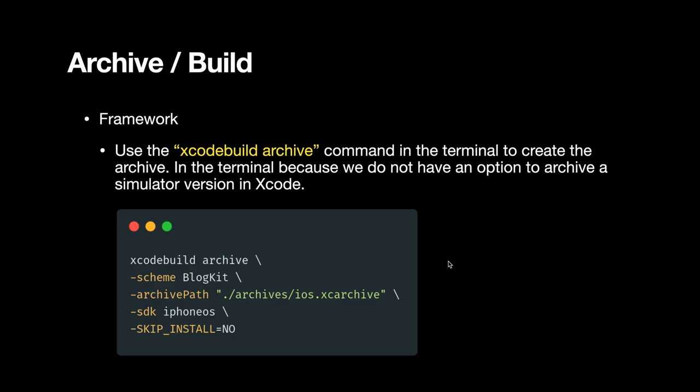It is a required step to ensure compatibility with different compiler versions or Xcode versions. When archiving your framework, you type xcodebuild archive and pass in different parameters such as the scheme — in this case it's BlogKit — the archive path or file name for your XCArchive, the SDK (either iphoneos or iphonesimulator), and optionally Skip Install set to No if you haven't done that in your project.